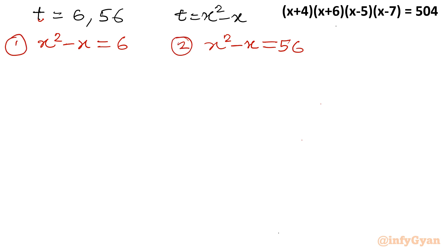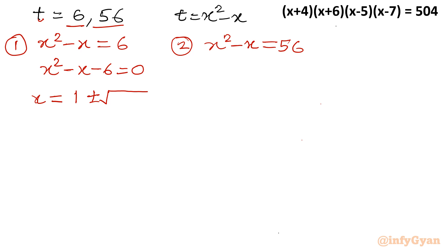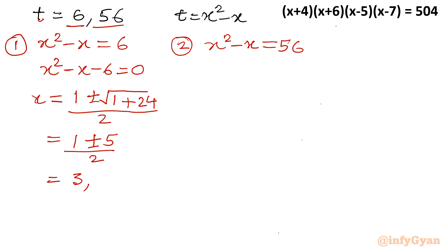From Equation 1: x²-x-6 = 0. Applying the quadratic formula, x = (1 ± √(1+24))/2 = (1 ± 5)/2. Taking the plus sign gives x = 3, and taking the minus sign gives x = -2. So we have two values from the first quadratic.